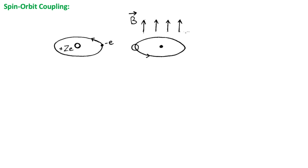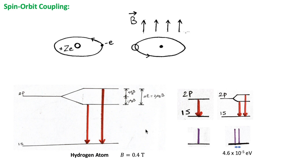This can be understood using a classical model. Consider an electron revolving about the nucleus. This electron will find itself in a magnetic field because in its own frame of reference, the nucleus is actually circulating about it. This magnetic field B acts on the electron's spin magnetic moment and produces an internal Zeeman effect — different from the normal and anomalous Zeeman effects, which result from the application of an external magnetic field to the atom.